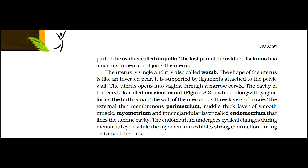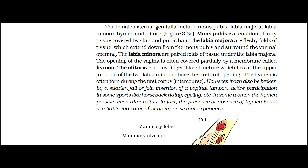The wall of the uterus has three layers of tissue: the external thin membranous perimetrium, the middle thick layer of smooth muscles myometrium, and the inner glandular layer called endometrium that lines the uterine cavity. The endometrium undergoes cyclic changes during the menstrual cycle, while the myometrium exhibits strong contraction during delivery of the baby. The female external genitalia include mons pubis, labia majora, labia minora, hymen, and clitoris, as given in figure 3.3a.